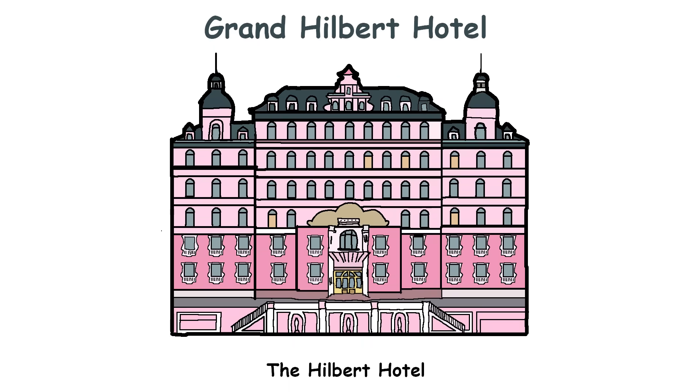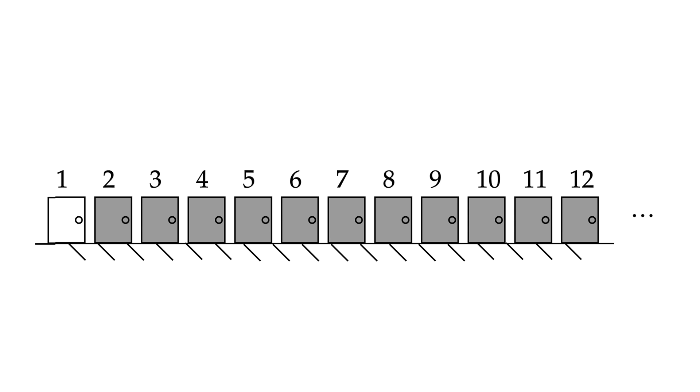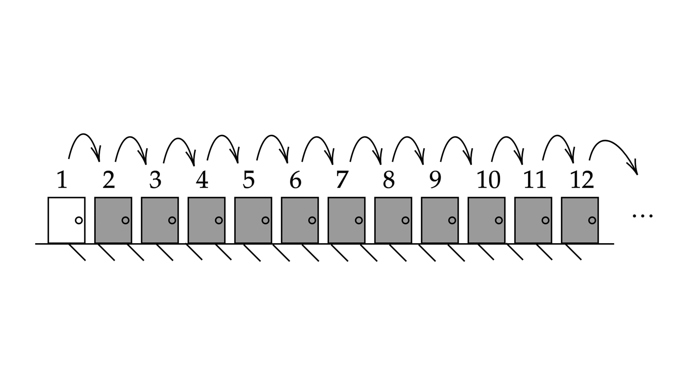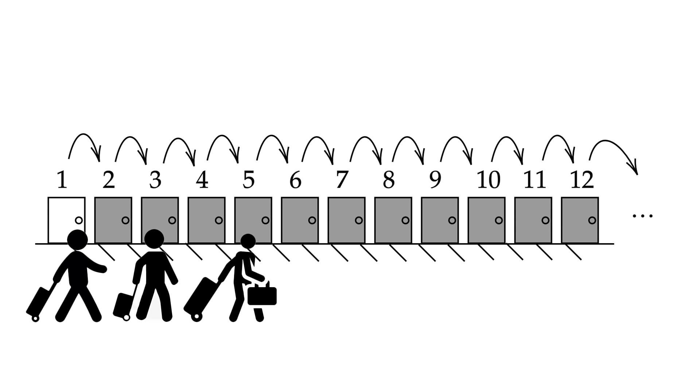The Hilbert Hotel. Imagine a hotel with an infinite number of rooms, each numbered from one and upwards without any limit. This means there's always room for every number you can think of forever. Now, let's say all the rooms are already occupied, but suddenly more guests arrive, each expecting their own room. Normally, in a regular hotel with a finite number of rooms, once all rooms are taken, there's no space for new guests. But here's the fascinating part. In this infinite hotel, even if an endless number of new guests show up, there's a way for everyone to get their own room.